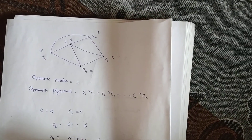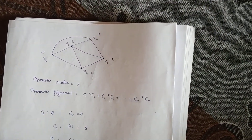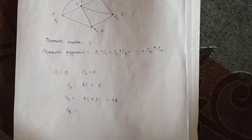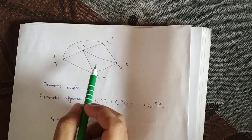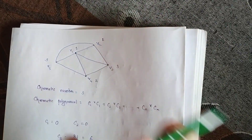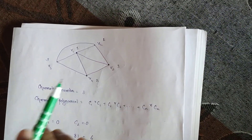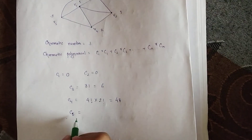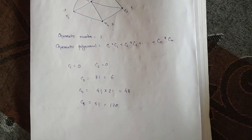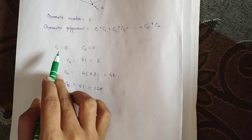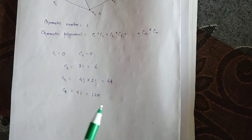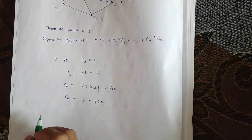For c5, each and every vertex can be colored with any of the five colors, so c5 equals 5 factorial, which is 120. Now we have calculated all coefficients c1 through c5.